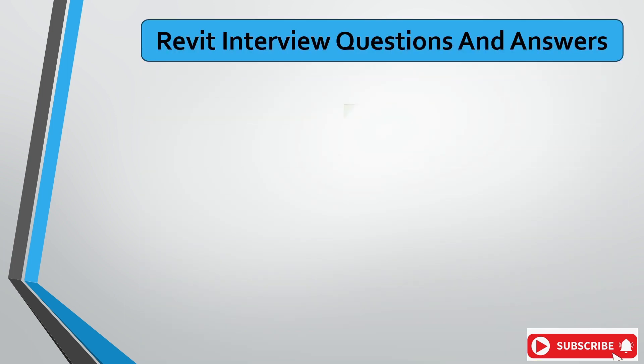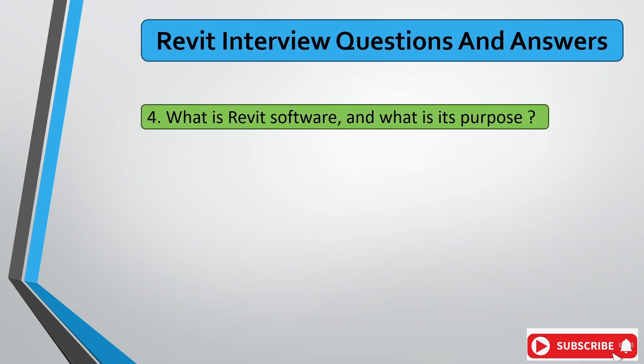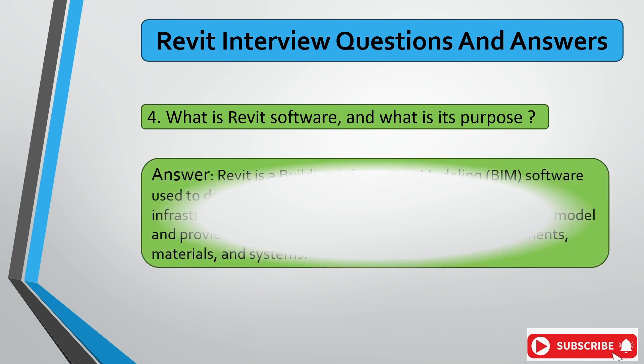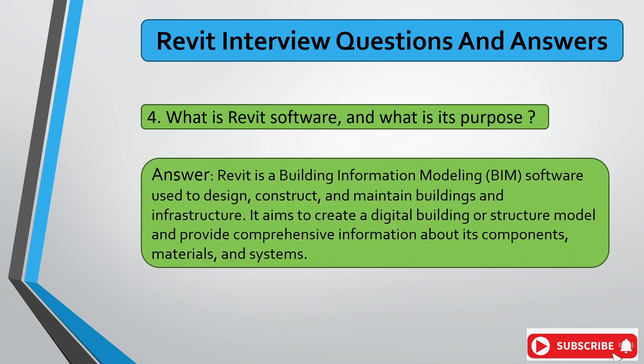The next question is: what is Revit software and what is its purpose? The answer is that Revit is a Building Information Modeling software used to design, construct, and maintain buildings and infrastructure. It is used to create digital building or structure models and provides comprehensive information about components, materials, and systems.